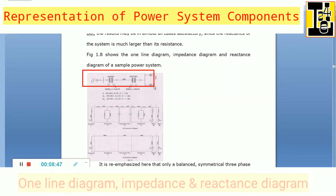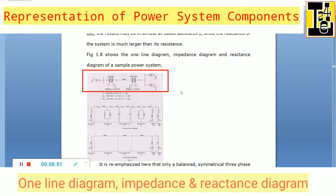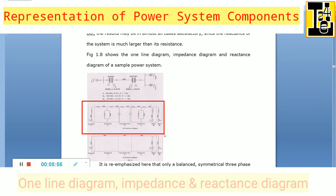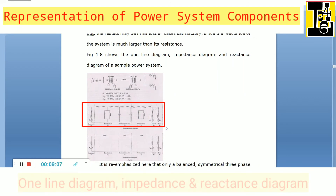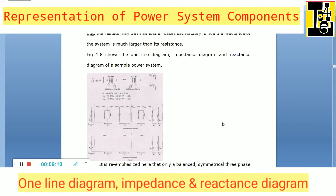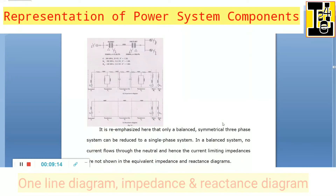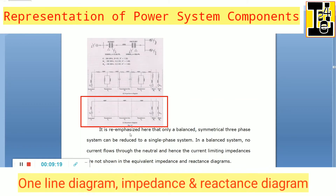The one line diagram is shown first, followed by the impedance diagram drawn by replacing each and every component with its equivalent impedance. If we then remove the resistors, the magnetizing circuits, and the capacitance of the transmission lines, we obtain the reactance diagram of the system.